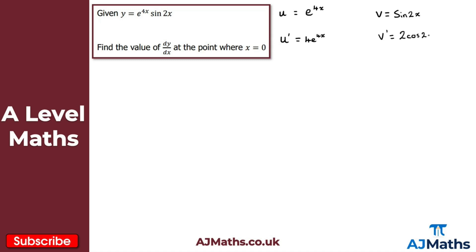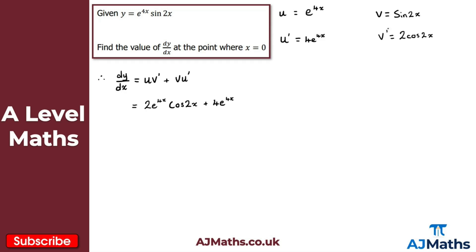We also need u prime and v prime. Differentiating e to the 4x gives 4e to the 4x. Differentiating sin 2x using the chain rule gives 2 cos 2x. The product rule formula is: dy/dx equals u·v prime plus v·u prime, so that's e to the 4x times 2 cos 2x, giving 2e to the 4x·cos 2x, plus sin 2x times 4e to the 4x, giving plus 4e to the 4x·sin 2x.